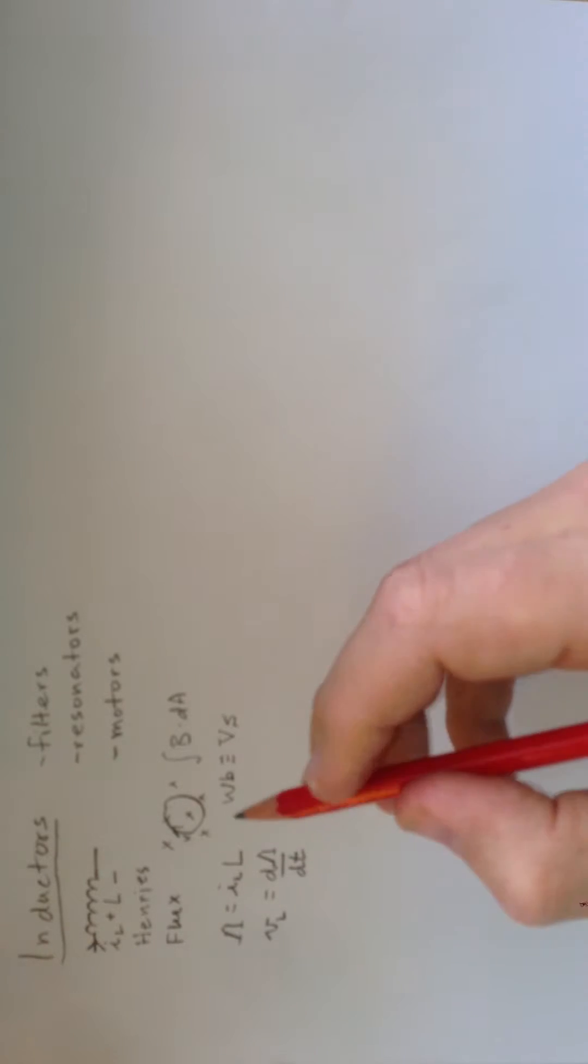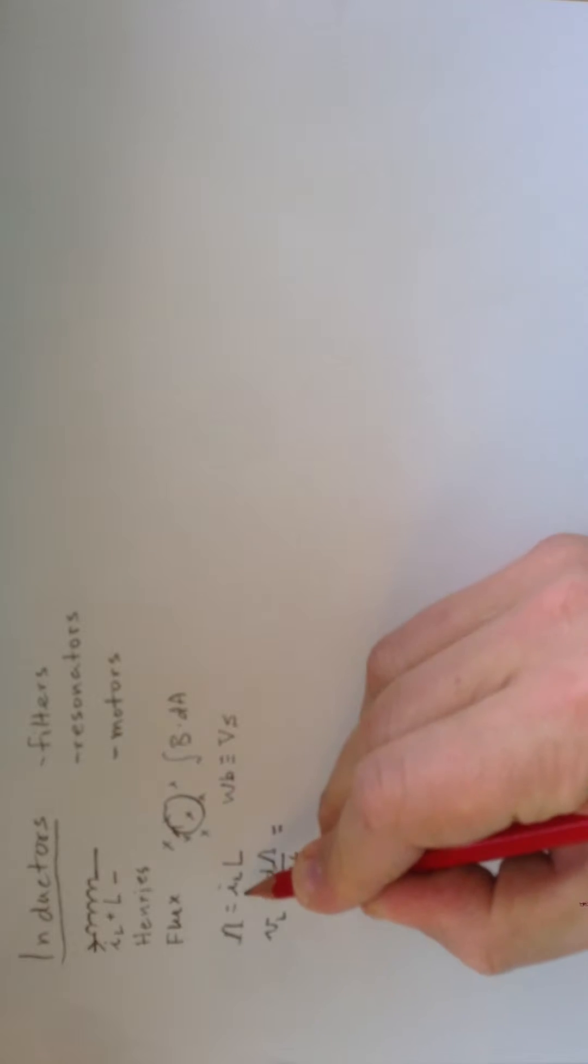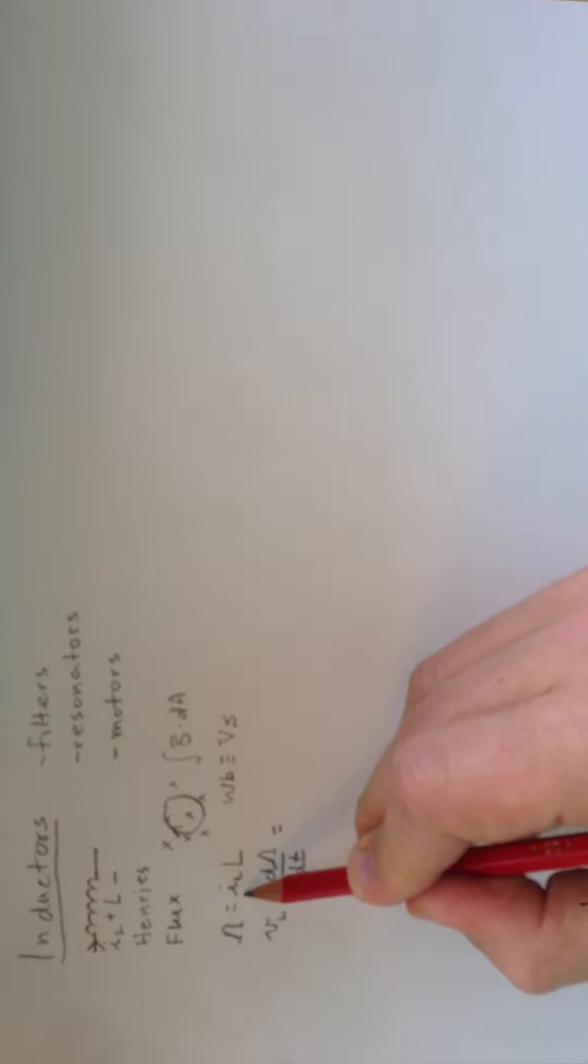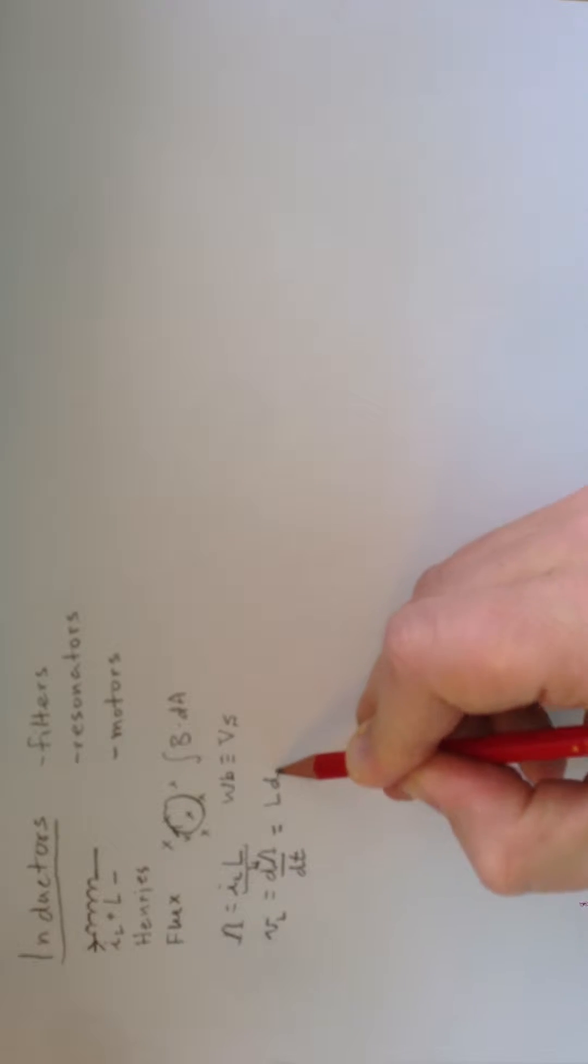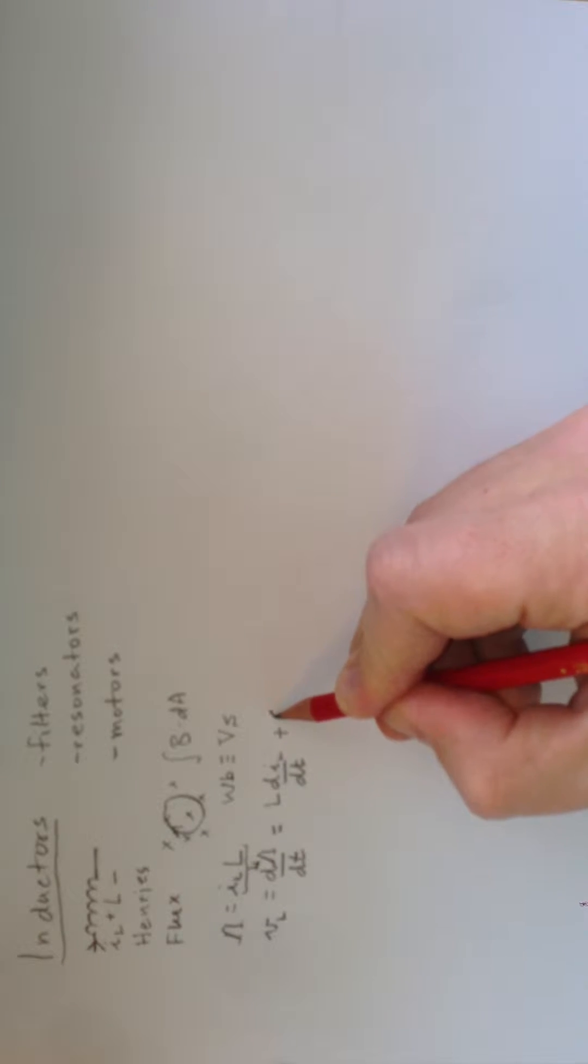And that means that if we differentiate this expression, IL, we take this into the flux here, and we differentiate it, then we get, from the chain rule, L DIL DT, plus, of course, IL times DL DT.